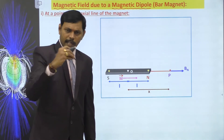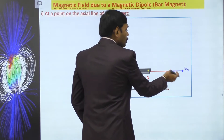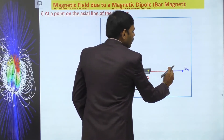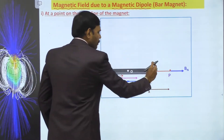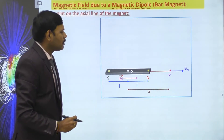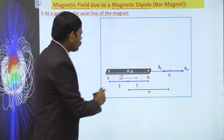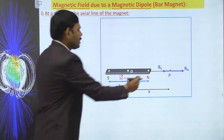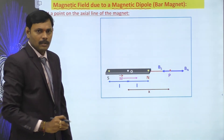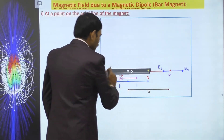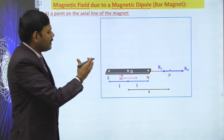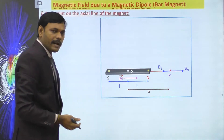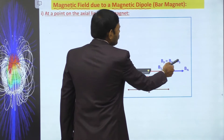Due to the north pole, the magnetic field at P is BN directed away from the north pole. Due to the south pole, the magnetic field at P is BS directed towards the south pole. Since BN and BS are in opposite directions along the axial line, the resultant magnetic field at P is BP = BN − BS.